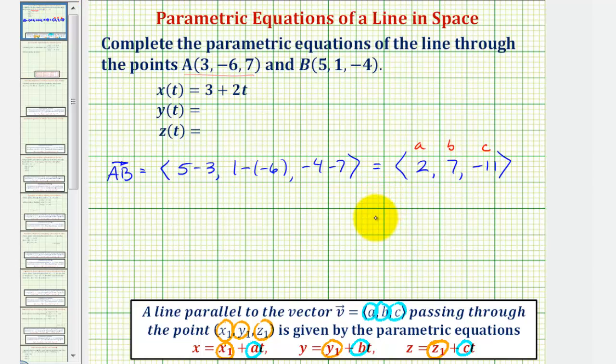If we're using point A, which has coordinates (3, -6, 7), this tells us that x₁ will be 3, y₁ will be negative 6, and z₁ will be 7.